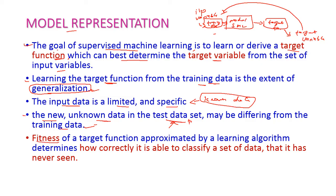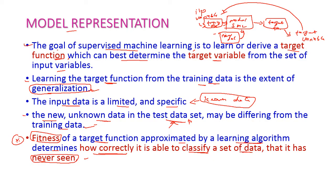The fitness of the target function approximated by the learning algorithm determines how correctly it is able to classify a set of data that it has never seen. Once the model is trained, it is used to test with new data called test data. While testing, we need to check how correctly it classifies the new data. This is called fitness.